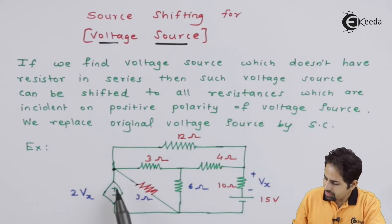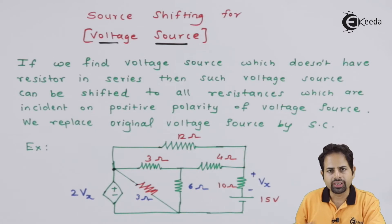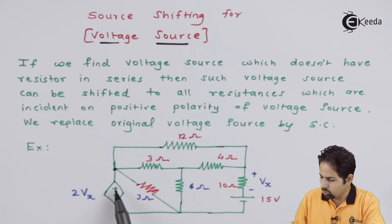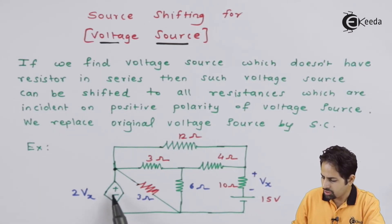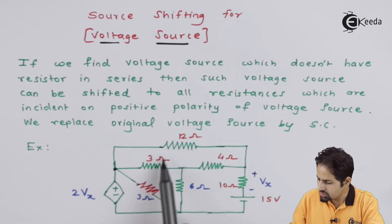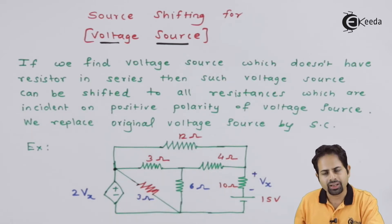So we will consider this node. And this voltage source later on will become a short circuit. If you remember, current source becomes open circuit. So now I will do one thing. I will give this same voltage which is dependent voltage to these 3 resistances and redraw the circuit.